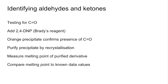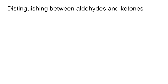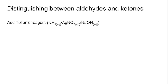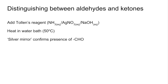Comparing the melting point to known data values will tell us what the original aldehyde or ketone was. To distinguish between aldehydes and ketones, you add Tollens' reagent — a combination of aqueous ammonia, aqueous silver nitrate, and aqueous sodium hydroxide, often referred to as ammoniacal silver nitrate. Add it to your sample and place it in a water bath at around 50°C. If you get a silver mirror formed, that confirms the presence of the aldehyde group CHO.